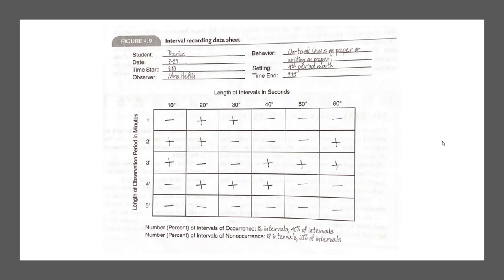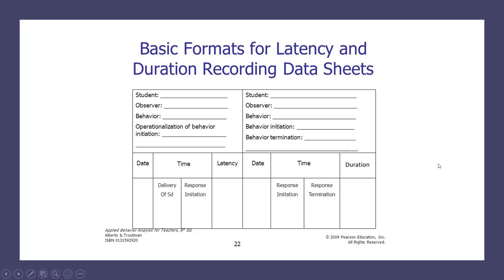Here's another example of an interval recording data sheet with 10-second intervals — a plus when behavior occurred, a minus when it didn't. For duration and latency recording, you're recording the amount of time. A typical latency data sheet includes the date, the delivery of the instruction, and when the behavior started, giving you a count of how long it took — reported in seconds or minutes, or as an average. Duration recording is similar: you put the date, the time the behavior starts and stops, and calculate either the total duration or average duration.